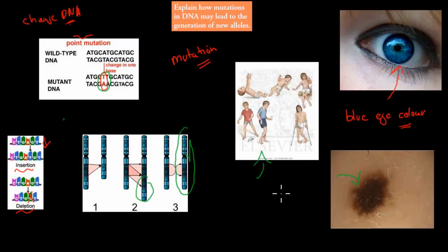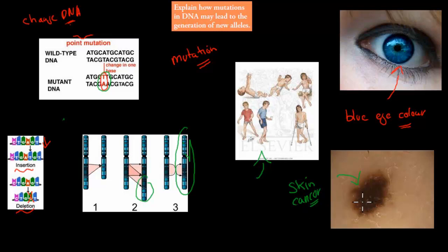Skin cancer itself is an example of a mutation in our cells — the cells just stop dividing properly because their DNA has been changed, and that leads to skin cancer. So these are some examples of mutations. There are many more mutations, some of which are beneficial for us, some of which are detrimental. But overall, you should know what a mutation is and that they're not necessarily all bad for us.